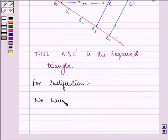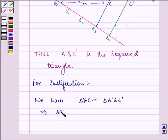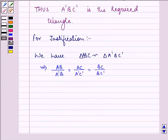We have triangle ABC similar to triangle A dash B C dash. So this implies that AB upon A dash B is equal to AC upon A dash C dash is equal to BC upon BC dash. But we know that BC upon BC dash is equal to BB3 upon BB4 which is equal to 3 upon 4.